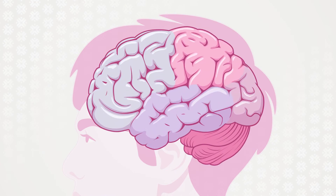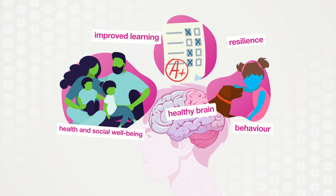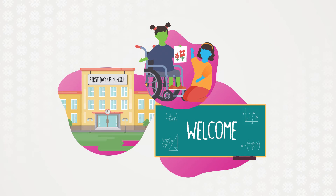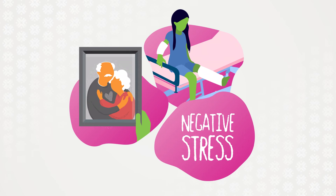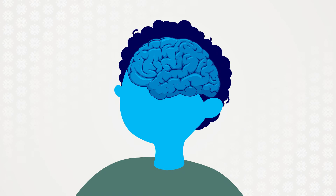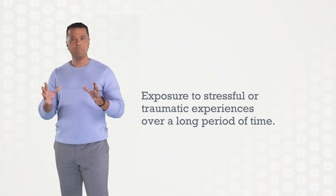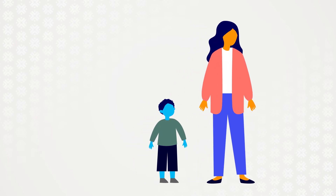The experiences we have early in life affect how our brains develop. Being exposed to positive interactions builds resilience and a foundation for healthy brain development, leading to improved learning, behavior, health, and social well-being throughout life. Stress is another major factor that shapes how our brains develop. Events that create positive stress, like the first day of school or meeting new people, can be healthy when supportive adults prepare a child for future challenges. In contrast, traumatic events like having an accident or losing a loved one create negative stress, which can have a lasting impact on the developing brain — but a supportive adult can help to buffer the stress response. Exposure to stressful and traumatic experiences over a long period of time, also known as toxic stress, can disrupt healthy brain development, especially when a child has no supportive adults to buffer the response to trauma.